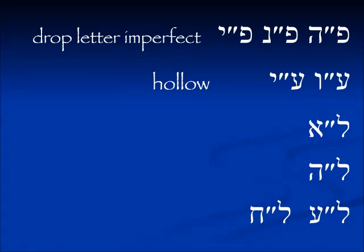They're regular in their irregularity. We have the drop letter imperfect, where the first letter might be He, Nun, or Yud. In the future tense, that letter drops out of the root in the conjugation. We have hollow verbs where the middle letter is either Vav or Yud. We have verbs where the last letter is Aleph, ones where it's He, and ones where it's either Ayin or Chet — they behave the same way. We have carried these through all the Binyanim, and the changes are quite regular.